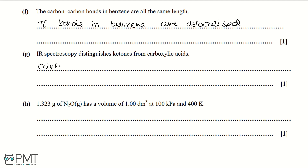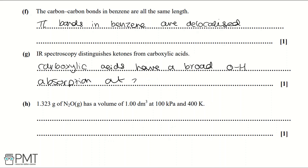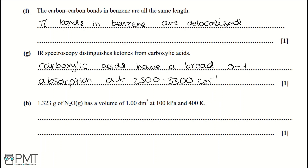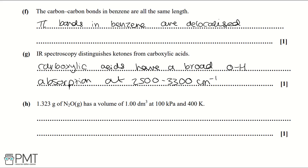Part G: IR spectroscopy distinguishes ketones from carboxylic acids. The reason is that carboxylic acids have a broad O-H absorption peak between 2500 and 3300 cm⁻¹, whereas ketones do not have this peak. To get the mark you must state that carboxylic acids have a broad O-H absorption between 2500 and 3300 cm⁻¹.